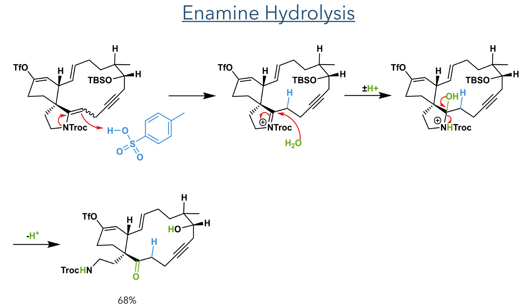The crude product of this reaction was taken forward without purification and subjected to hydrolysis conditions with PTSA in wet methanol. The enamine is first protonated, and water can then act as a nucleophile towards the iminium ion, generating a hemi-aminal intermediate. A proton transfer generates the ammonium leaving group, and the carbon-nitrogen bond is broken as the carbonyl forms. Overall, the Troc protection, alkyne metathesis, and hydrolysis steps form the product in a 68% yield over three steps.